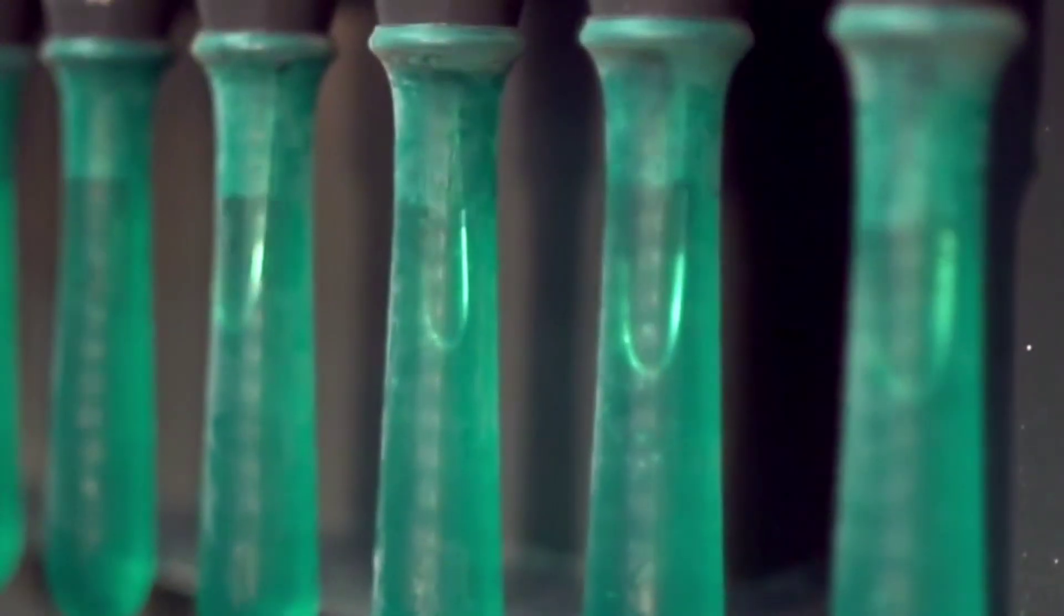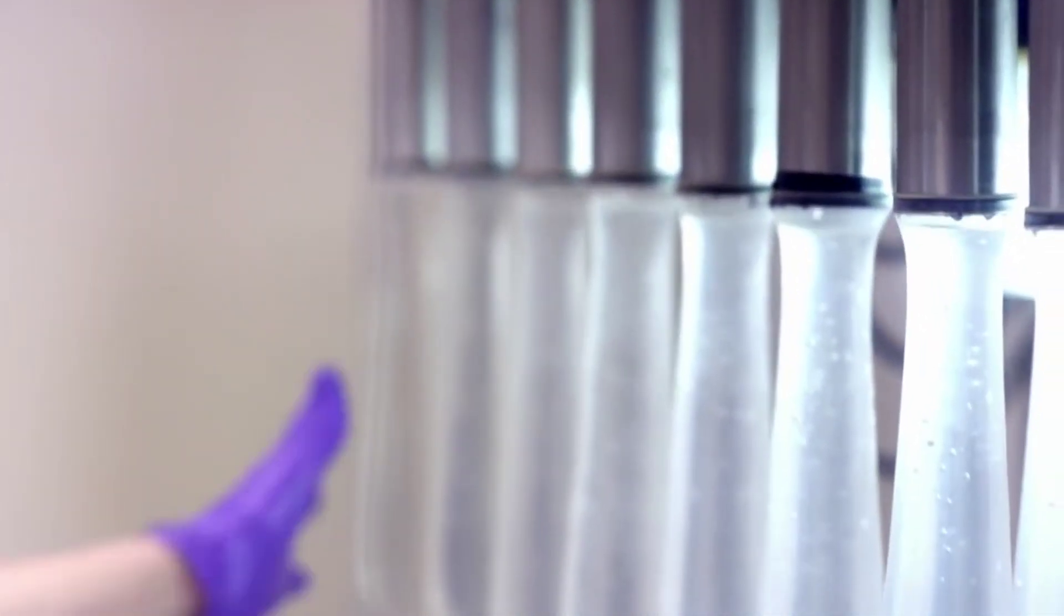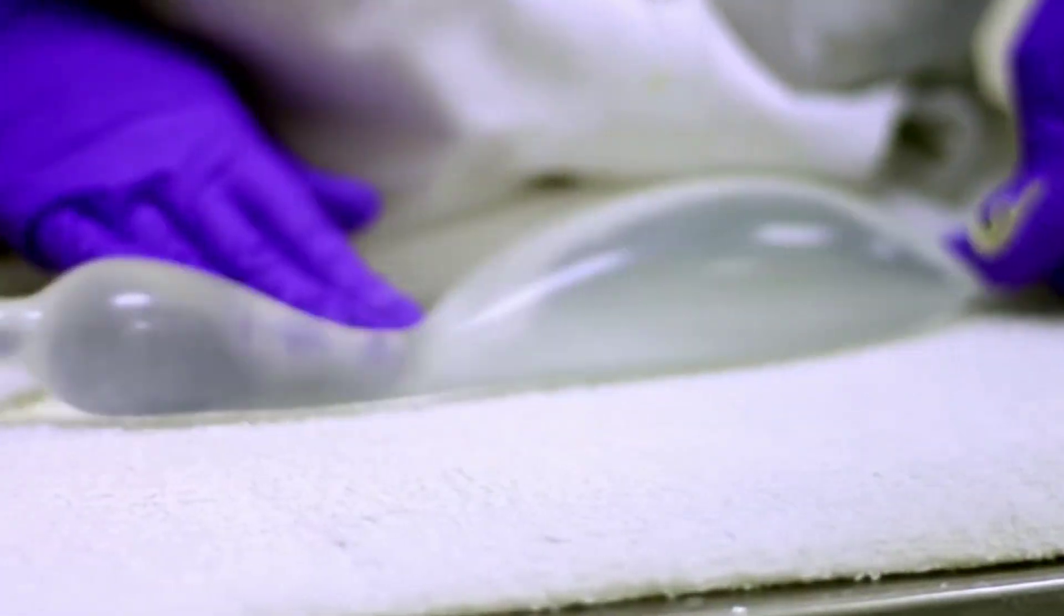The next that happens is the water test. In the water leakage test, the condom is filled with 300 milliliters of water and inspected for pin-sized holes by rolling it along blotter paper.